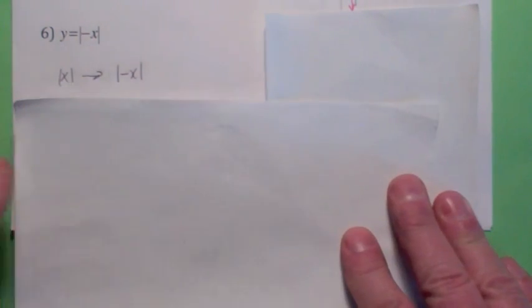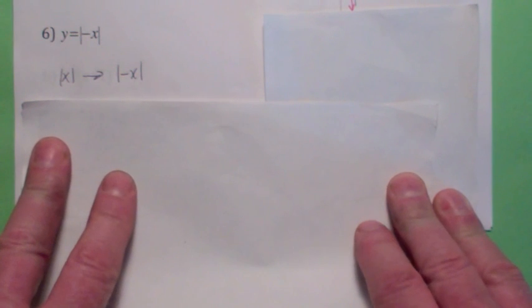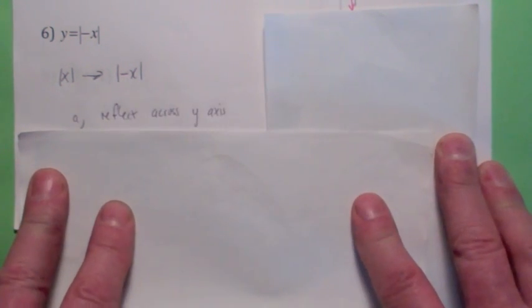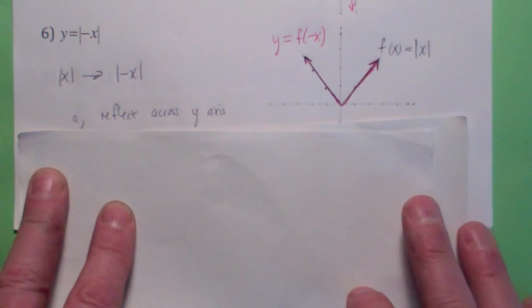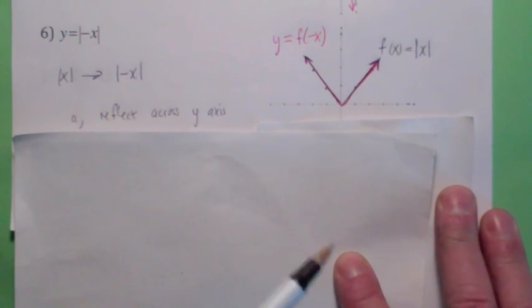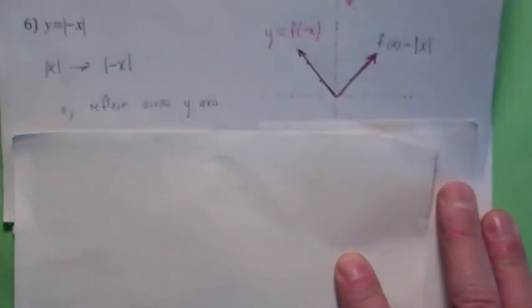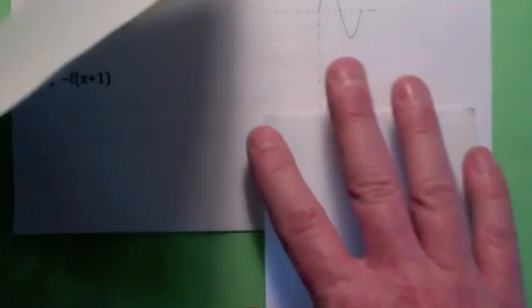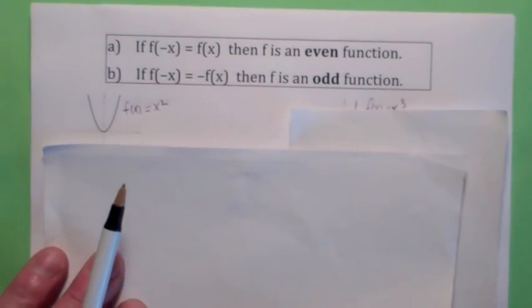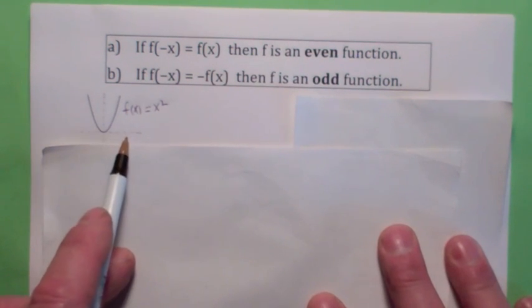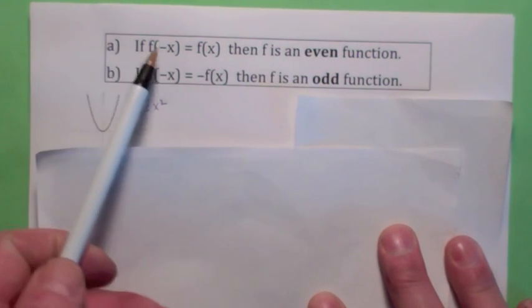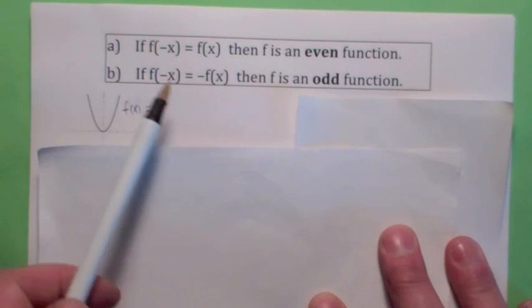In terms of a sequence of transformations, all you're doing is reflecting the graph across the y-axis. So if you start with the absolute value function and reflect it across the y-axis, it stays the same. That shouldn't be too surprising because isn't the absolute value of x already symmetric with respect to the y-axis? So when you take a graph that's symmetric with respect to the y-axis and reflect it across the y-axis, you get the same graph back. And we have a name for that — that's called an even function. A good example of an even function would be f(x) = x². If you reflect it across the y-axis, you get the same graph back. It's even.